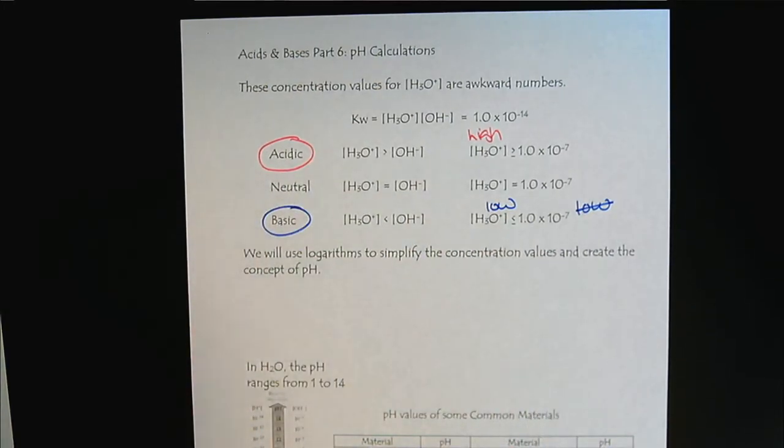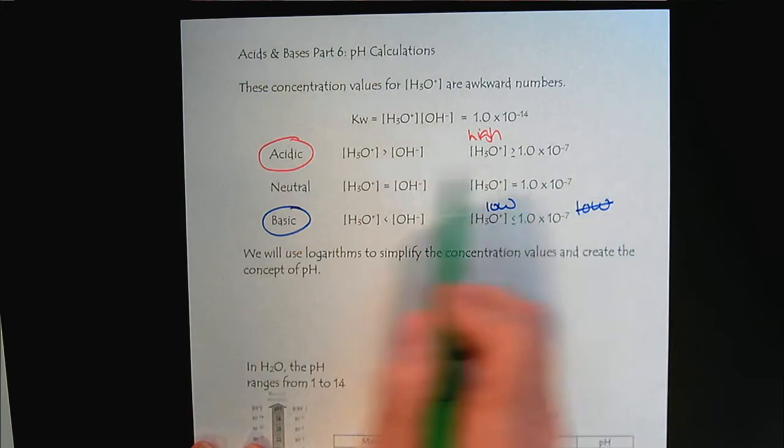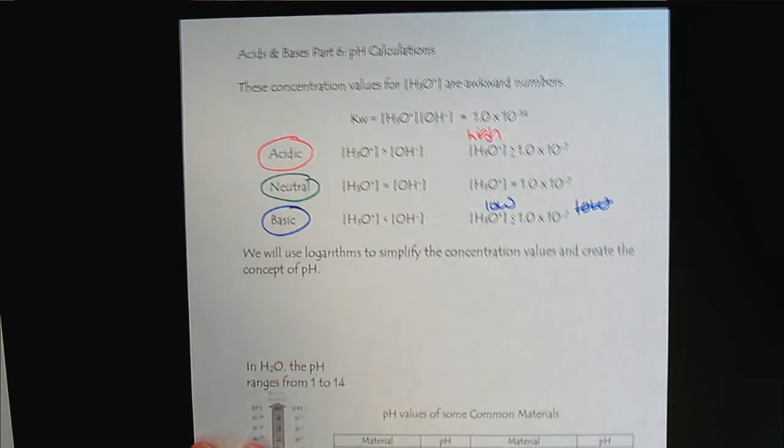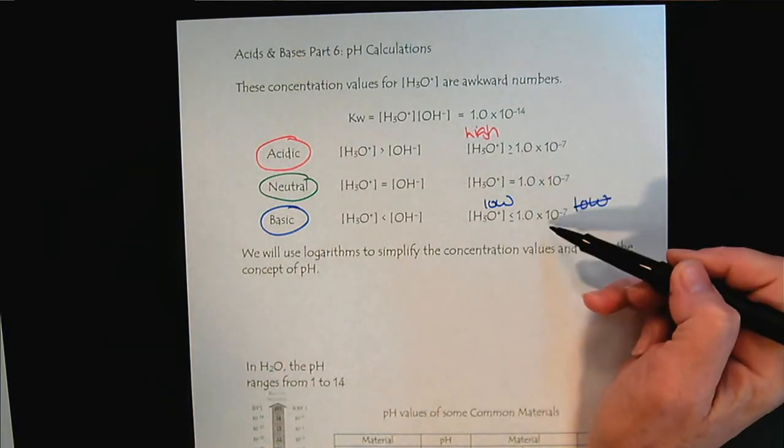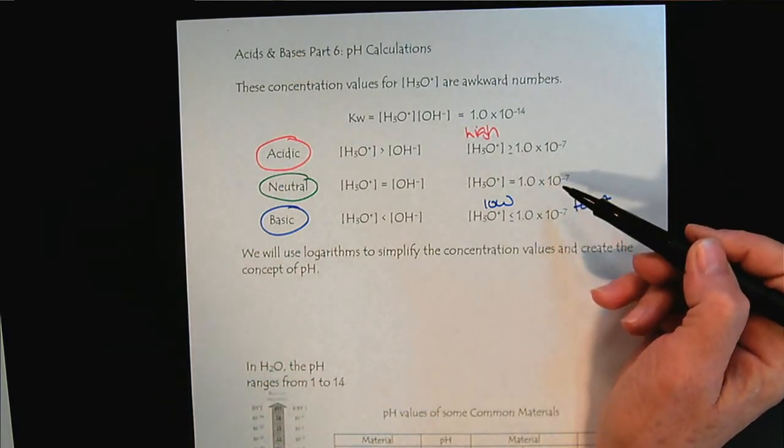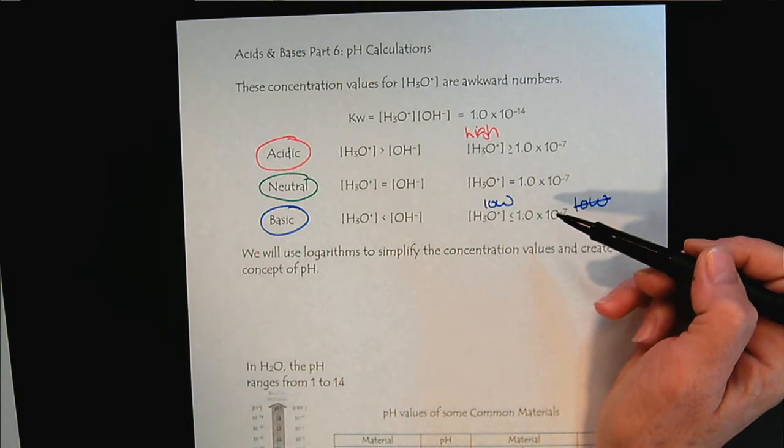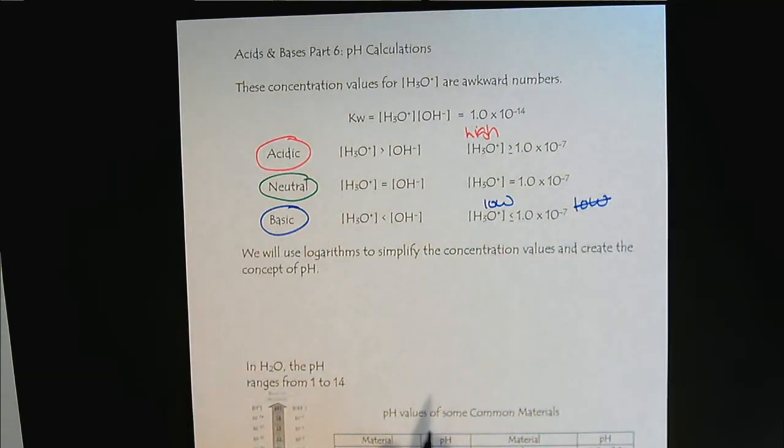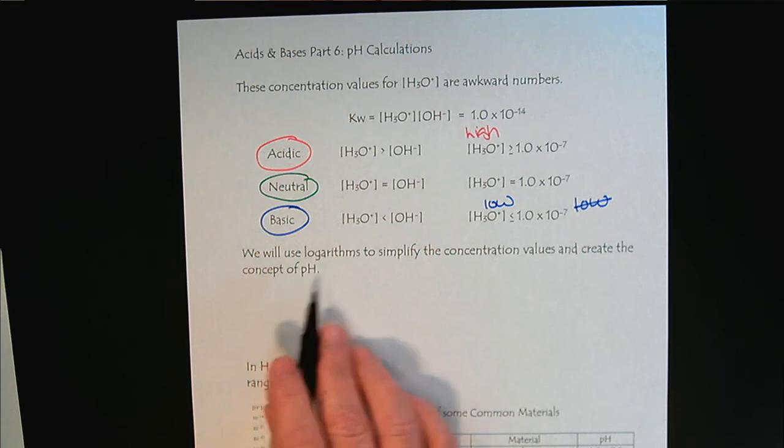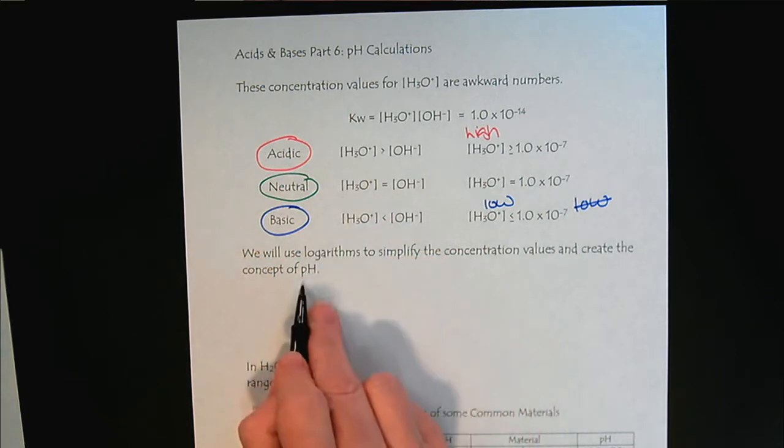And when the hydronium concentration is in balance with the hydroxide, it's neutral. But as we look at these concentrations, they're very clunky. We have to use scientific notation and they're a bit messy or awkward. So what we like to do in chemistry is we take the hydrogen ion concentration and we're going to take the negative log.